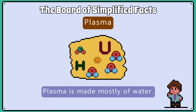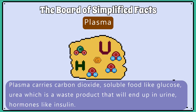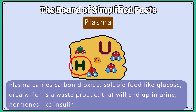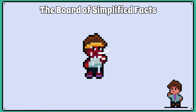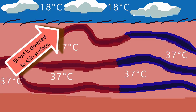Finally, the plasma, which is made mostly of water, carries carbon dioxide, soluble food like glucose, urea which is a waste product that ends up in urine, and hormones like insulin. It also helps to distribute heat around the body. When you get hot, your skin turns red as blood is diverted to the surface so heat can be transferred to the environment more easily, helping the body to cool down.